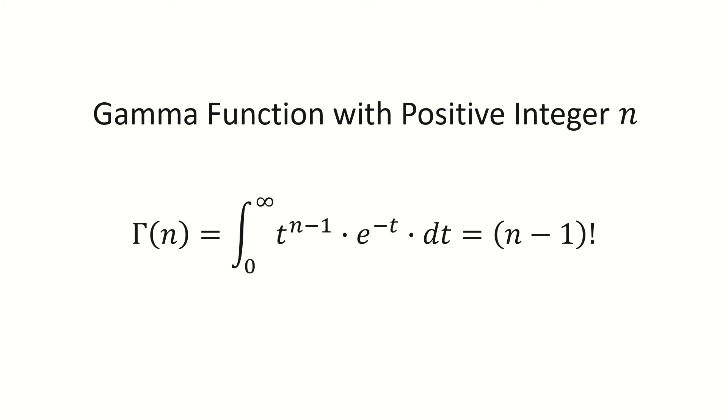Hello! In this video, I will calculate the gamma function when n is a positive integer and I will show that gamma n equals n minus 1 factorial. Let's get started.